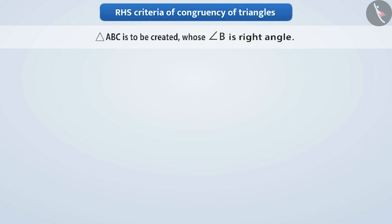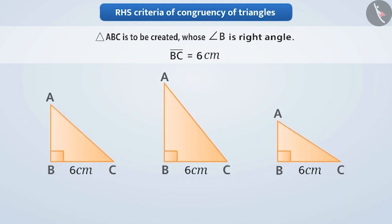With this, if you are given a measurement of an arm forming the right angle such as BC equals 6 cm, will you be able to construct a unique triangle? In this case also we will get different types of triangles.